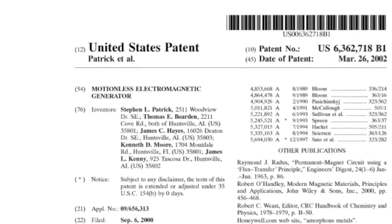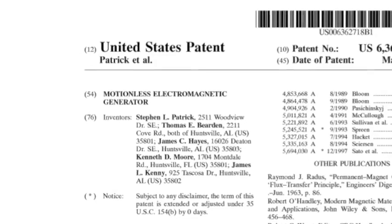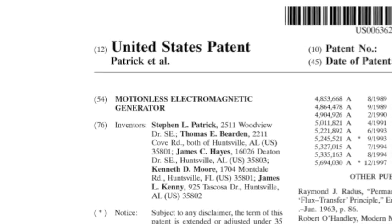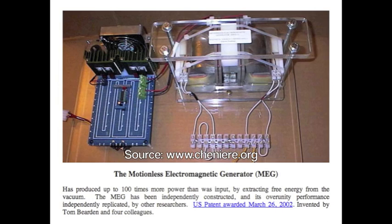In March of 2002, a US patent was issued for the motionless electromagnetic generator. The Meg has produced up to 100 times more power than was input, by extracting energy from the vacuum. The Meg has been independently constructed, and its over-unity performance independently replicated by other researchers.